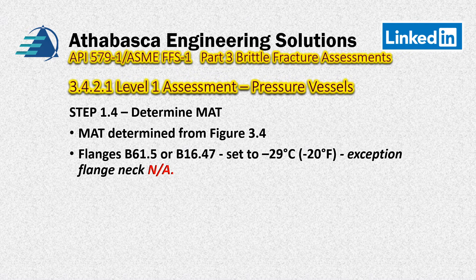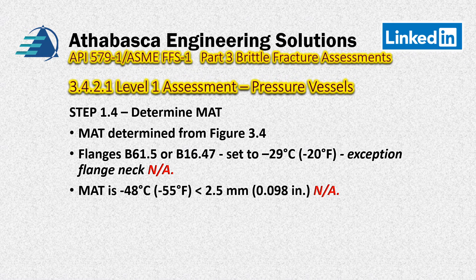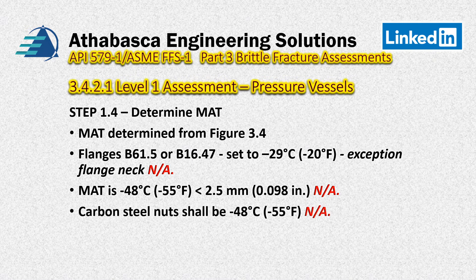There's an exception with flanges — if we have, for example, a forged nozzle, then there are some exceptions in the code for that. The MAT is minus 48 if the material thickness is less than 2.5 millimeters, and that's also found in Section Eight Division One and Two. This is not applicable here — we have one inch. And for carbon steel nuts, we're supposed to use minus 48, which is also not applicable in this case.